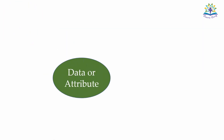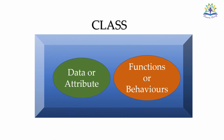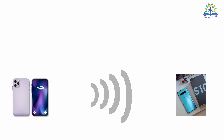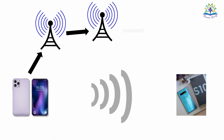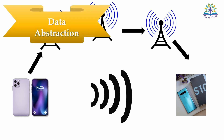We said the data and functions are bound together inside the class. This feature is known as data encapsulation. Suppose you make a call — there are so many actions that take place in the background. The signals are transmitted to a nearby tower, the tower then routes the call to an appropriate network, and after many reroutings, the call reaches the user. But we are not aware of all these happenings. This feature is known as data abstraction — the user is provided only with essential features without giving all the background details.